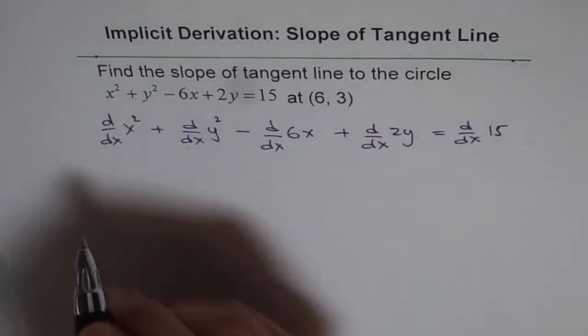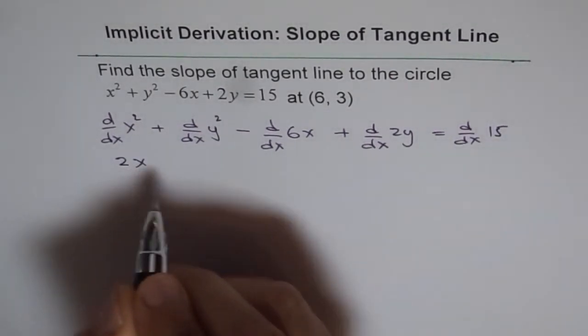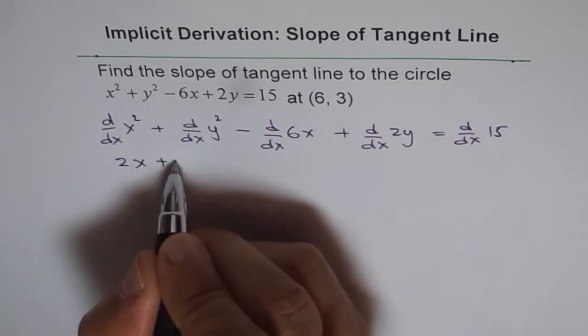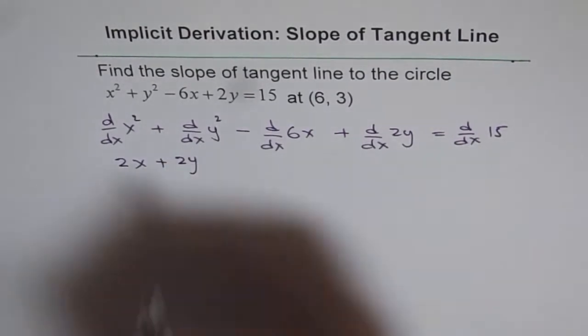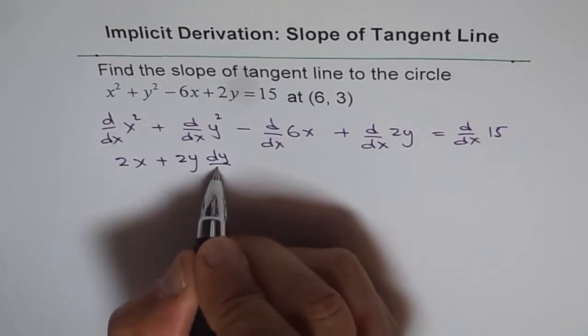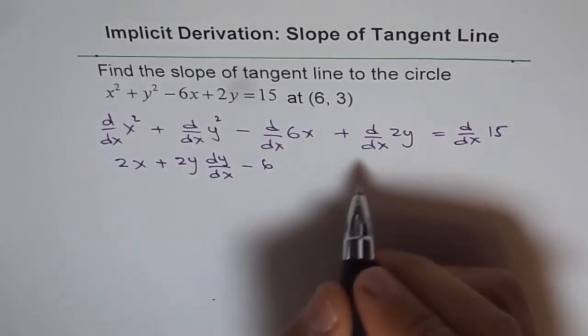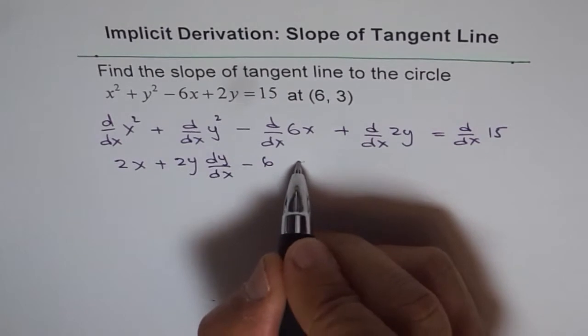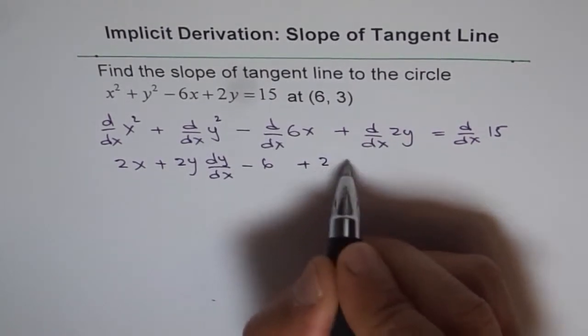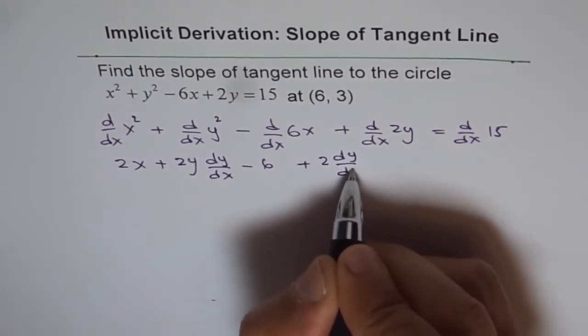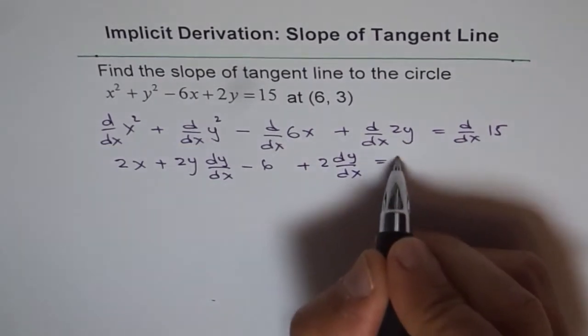Now, the derivative of x square is 2x. Derivative of y square is 2y, but since it's with respect to x, we have dy dx by the chain rule. And here we get minus 6, plus 2 dy dx, and the derivative of a constant is 0.